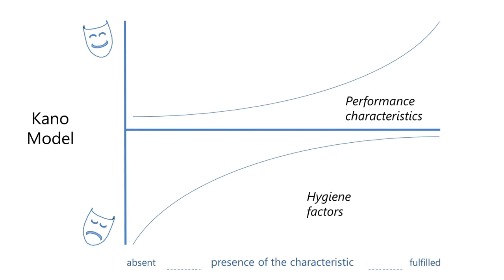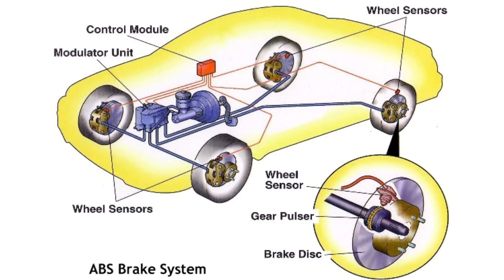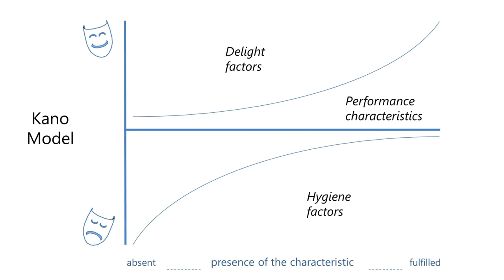The second of these invisible factors are what Kano called attractive quality, and what we today would call delight factors. These are things customers don't ask for, simply because they don't believe they're possible. A few years ago, something like ABS would be a delight factor. People didn't imagine you could have a system that tracked the movement of the tyres, and if there was juddering, it would back off on the braking 100 times a second. That sounds impossible, but ABS today is absolutely standard — I would put that in the performance factor category.